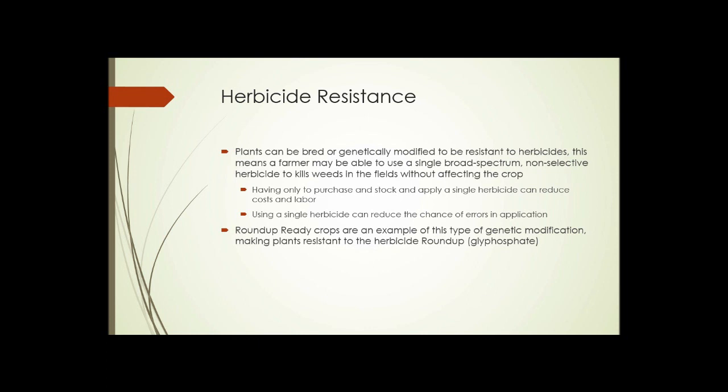Herbicide resistance: plants can be bred or genetically modified to be resistant to herbicides. This means a farmer may be able to use a single broad-spectrum, possibly non-selective herbicide to kill weeds in the fields without affecting the crop, regardless of the type of weed present, and in some cases the crop being grown. Having to only purchase, stock, and apply a single herbicide can reduce costs and labor. Using a single herbicide can also reduce the chances of error in application because it's always applied the same way. Roundup-ready crops are an example of this type of genetic modification, making plants resistant to the herbicide Roundup, or glyphosate.